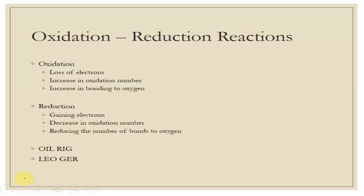If we're going to identify redox reactions, the first thing we need to talk about is what it means to be oxidized or reduced. Oxidation is a loss of electrons, which corresponds to an increase in oxidation number, or alternatively, more bonds to oxygen. Reduction, on the other hand, is gaining electrons — you're gaining that negative — so it gives a decrease in oxidation number, and possibly a reduction in the number of bonds to oxygen.